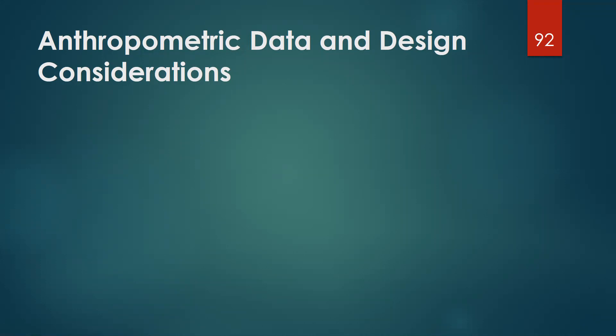Bismillahirrahmanirrahim. Welcome back. In the last few segments we discussed three important anthropometric principles and how we can use applied statistics to design products using anthropometric principles. We discussed designing for the minimum, for the maximum, or for a range. The question is why don't we design for 100 percent of the population? The answer is that would be ideal, but it is generally not possible either from a cost, usability, or safety point of view.